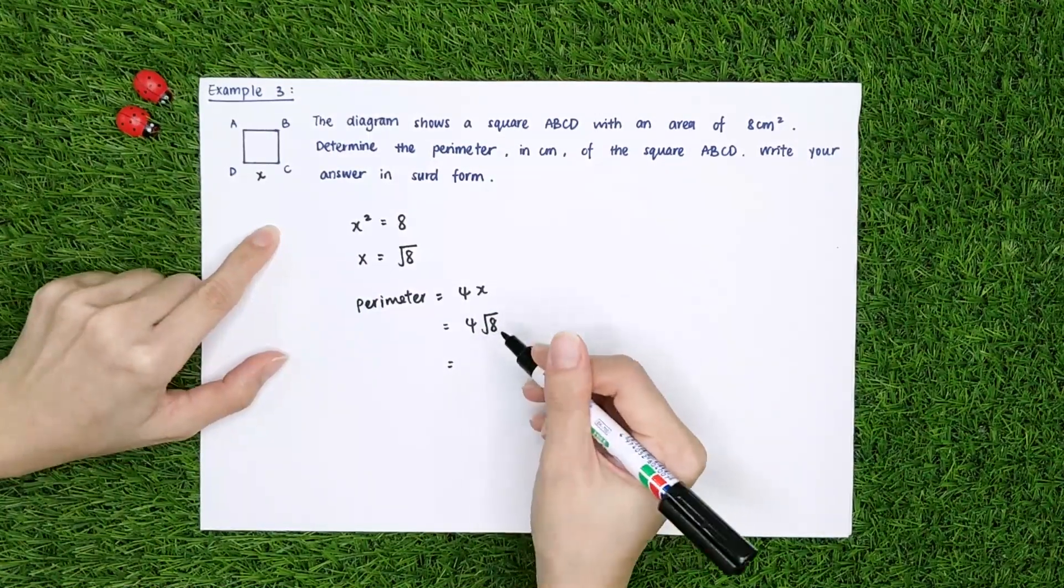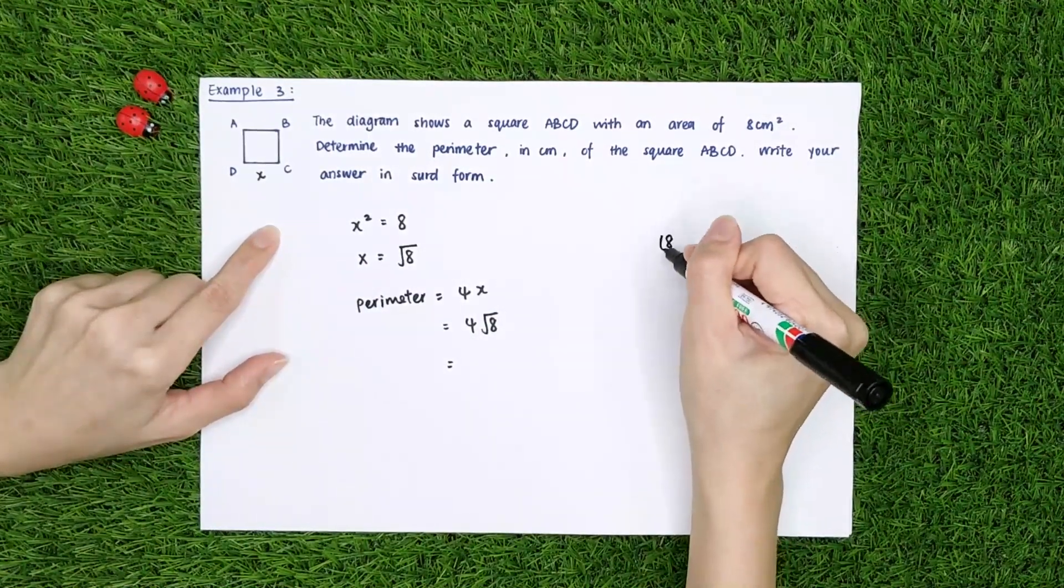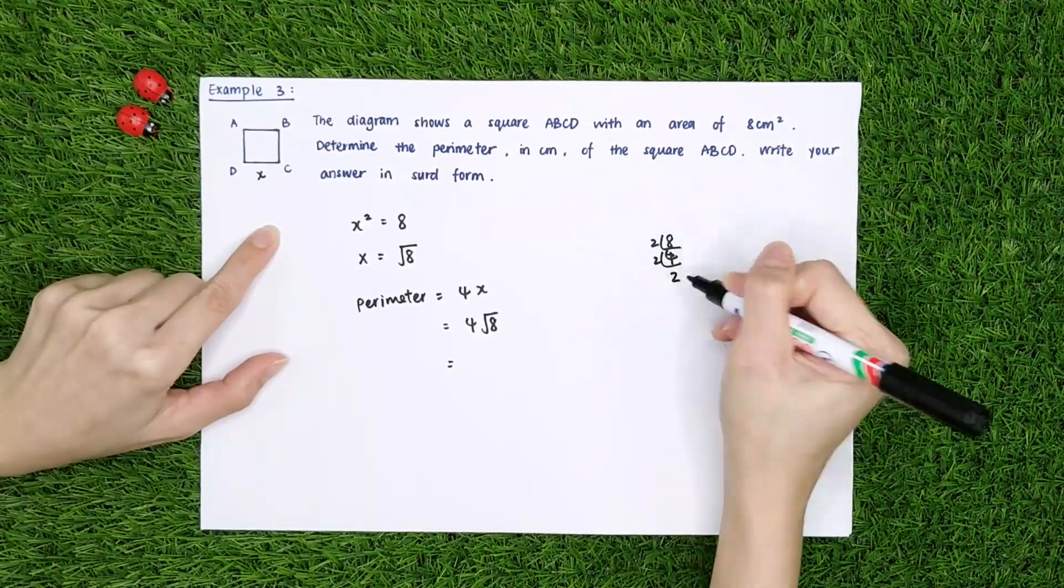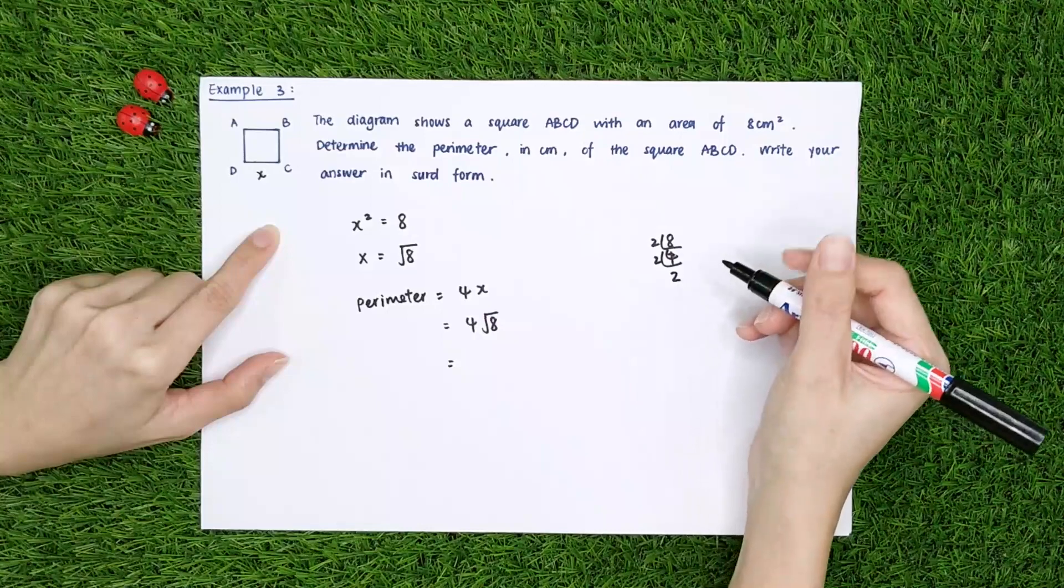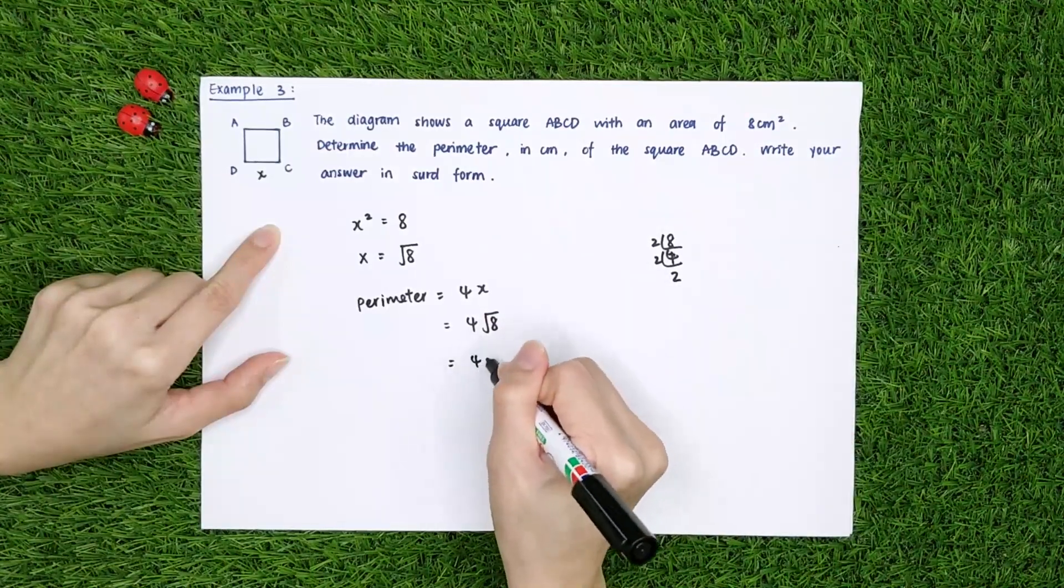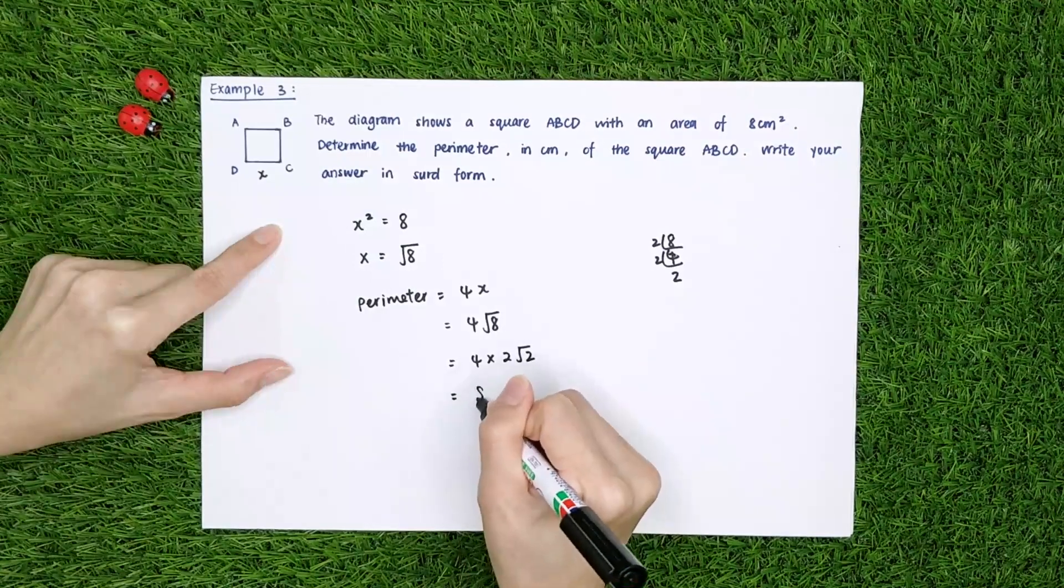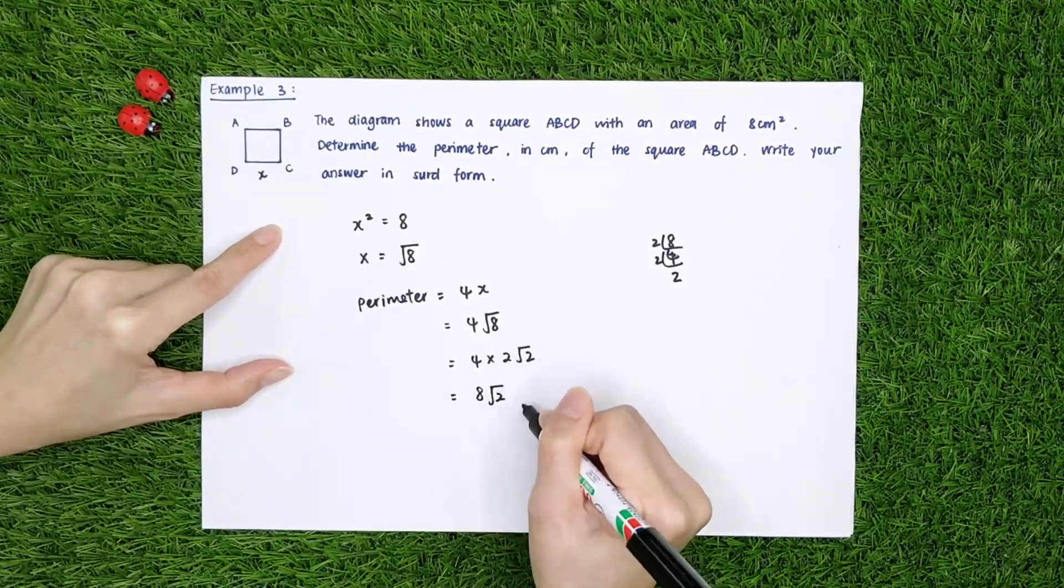Okay, but square root of 8, I can change it become 8 divided by 2. I can get 4 here. Divide by 2 again, I can get a 2 here. So, square root of 8, I can write it become 2 square root of 2. Which is 8 square root of 2 cm.